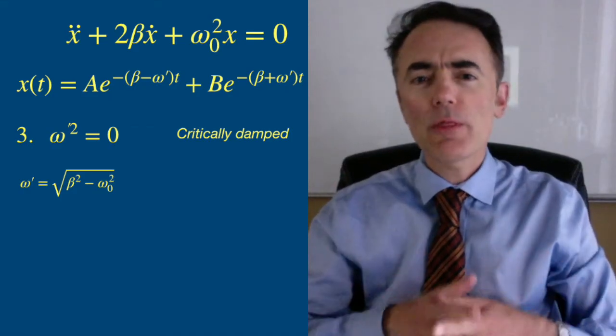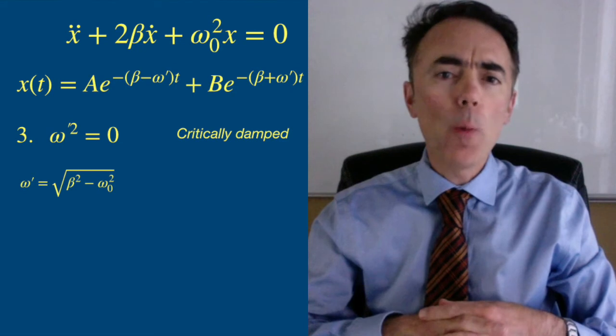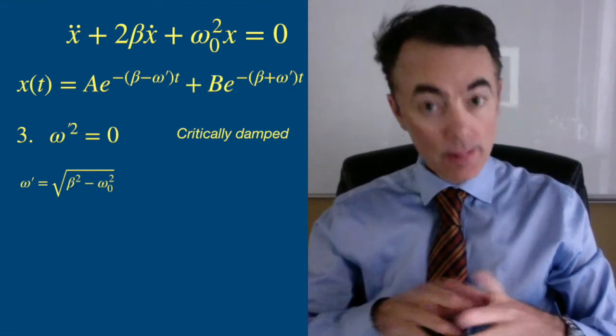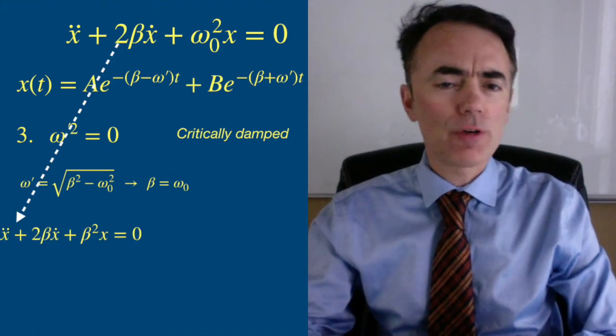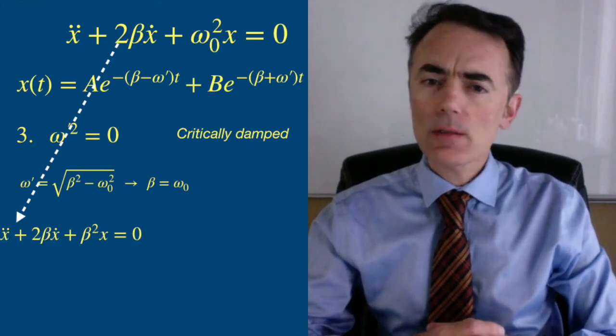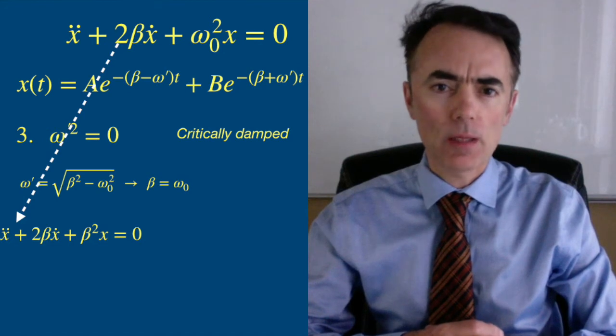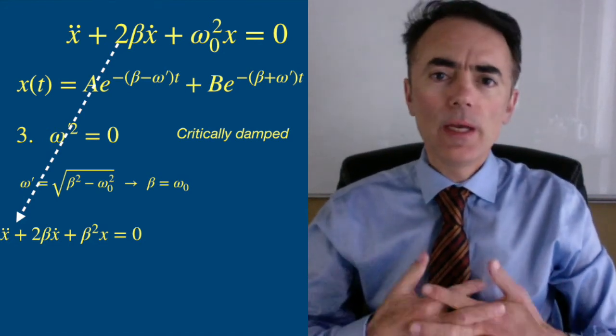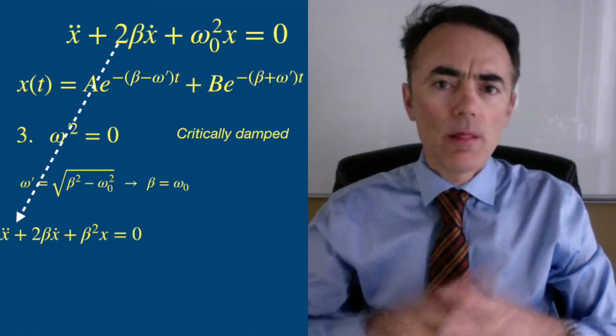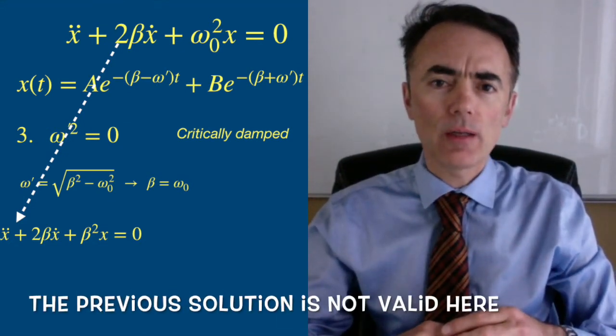Now, what about the third case when omega prime squared is zero? This means that beta equals omega naught. We can rewrite the differential equation as x two dots plus 2 beta x dot plus beta squared x equals zero. Here we need to go and solve it again. The one solution we found is not valid here.